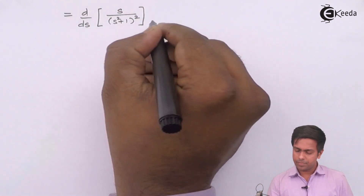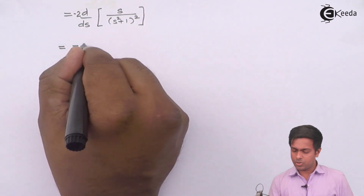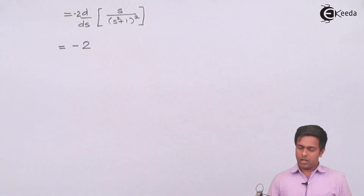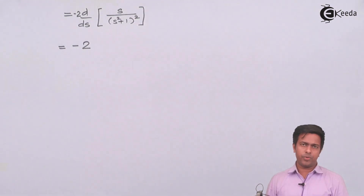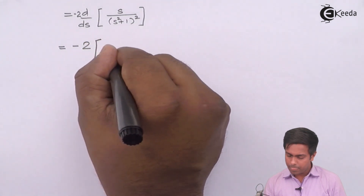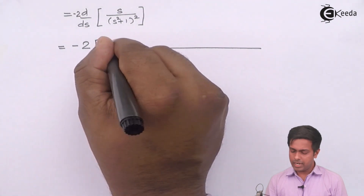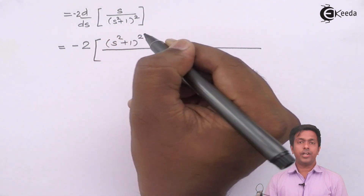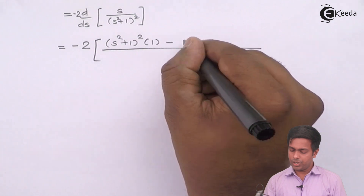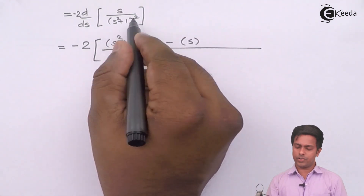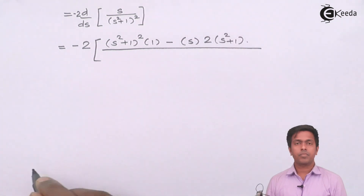Now to find the derivative of s/(s² + 1)², since we have a numerator and denominator both involving s, we apply the u/v (quotient) rule. By the quotient rule: the first term is v, which is (s² + 1)², times the derivative of u, which is 1; minus u, which is s, times the derivative of v, which is 2(s² + 1) · 2s.